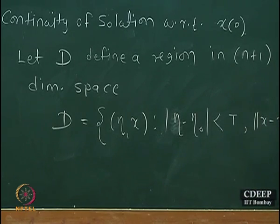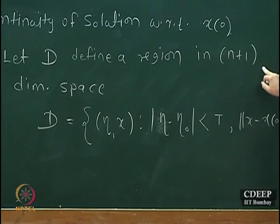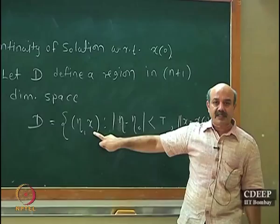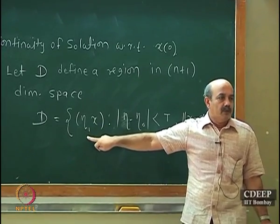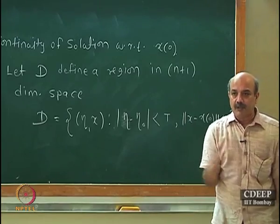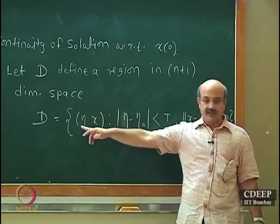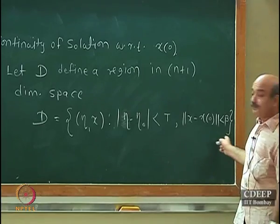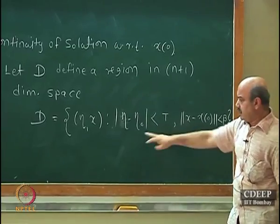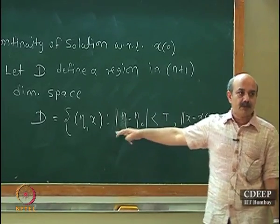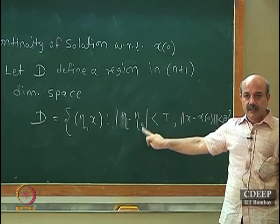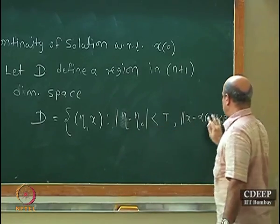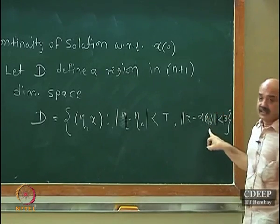I am defining a region in n+1 dimensional space — n+1 dimensions because x is an n-dimensional vector and η (time or space) is a scalar parameter. The region is defined using norms. θ₀ is the initial point, and x(θ₀) is the initial value of the state vector, so the region is defined as x minus x(θ₀) being within some bound.